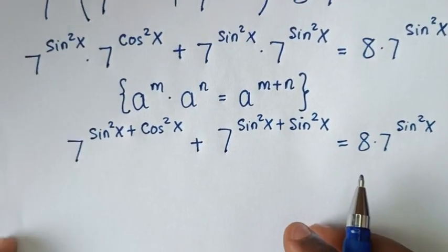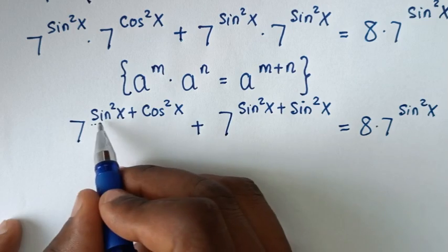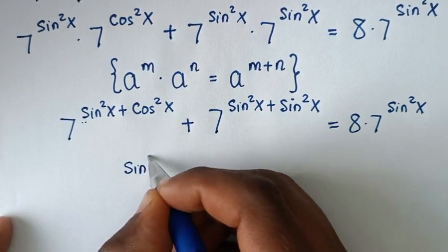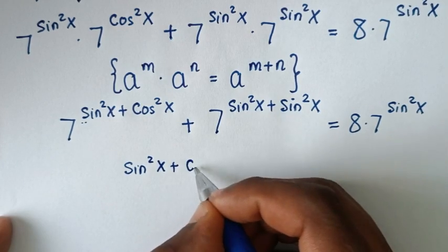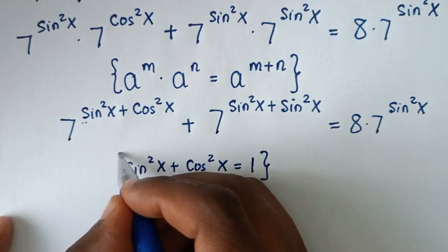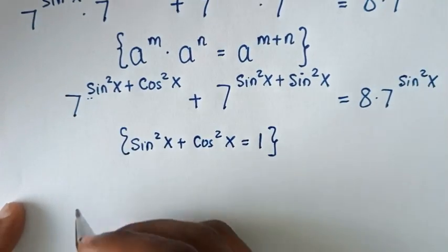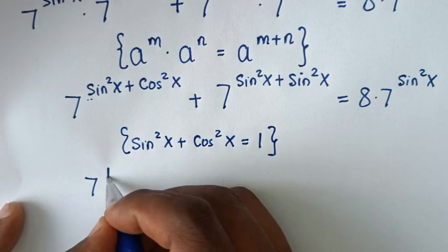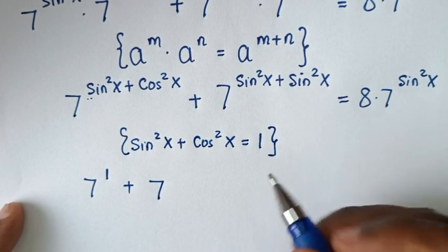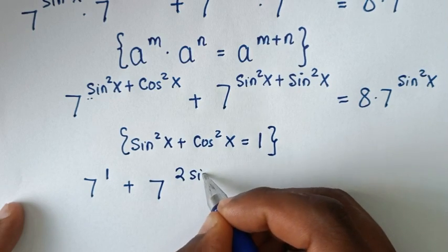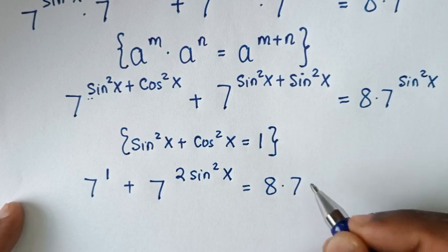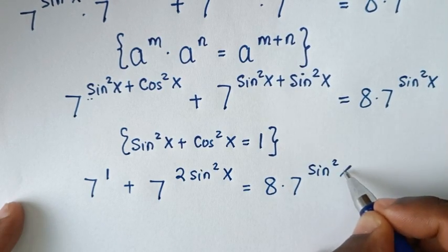In the next step, from the part sin²x + cos²x, we apply the trigonometric identity sin²x + cos²x = 1. So it becomes 7^1 plus 7^(2sin²x) equals 8 times 7^(sin²x).